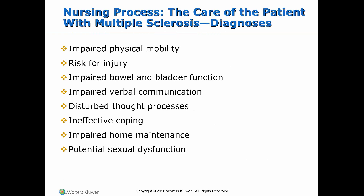The nursing diagnoses for patients with multiple sclerosis include impaired physical mobility, risk for injury, impaired bowel and bladder function, impaired verbal communication, disturbed thought processes, ineffective coping, impaired home maintenance, and potential sexual dysfunction.